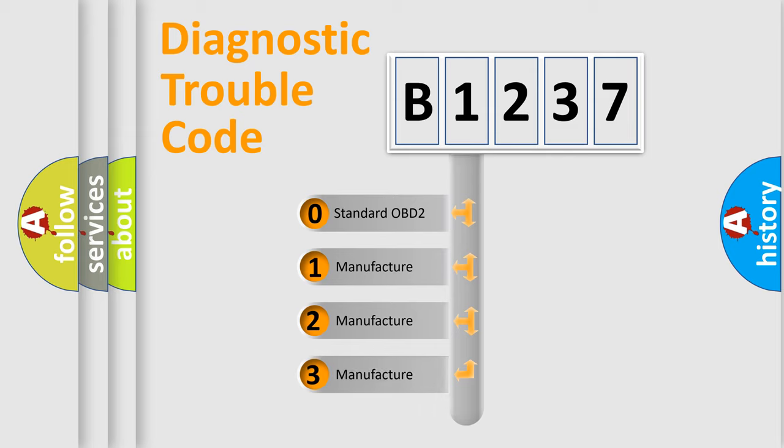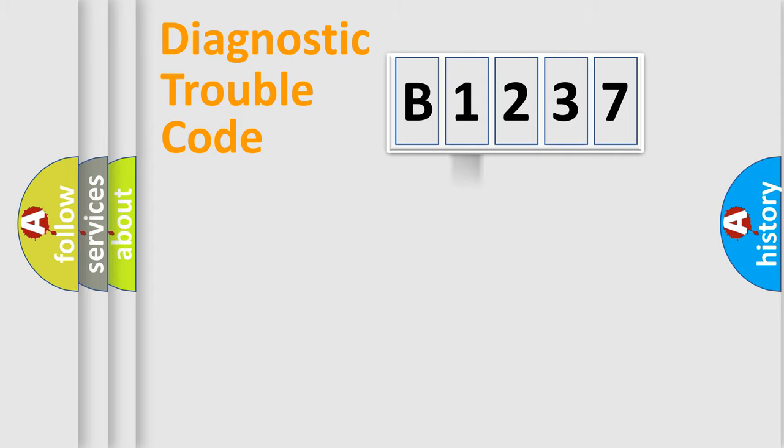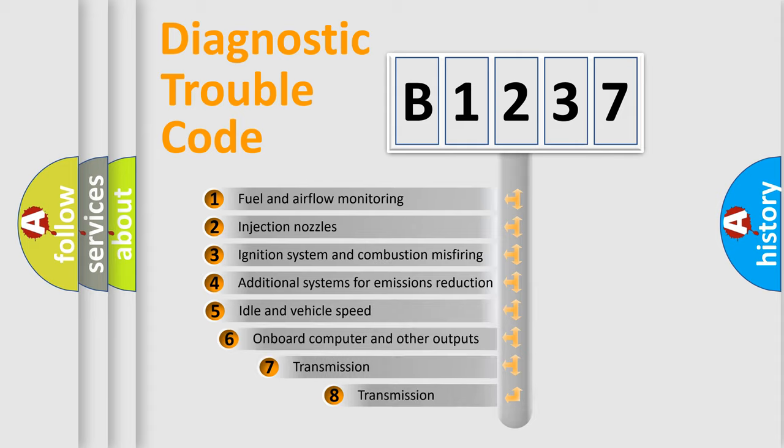If the second character is expressed as zero, it is a standardized error. In the case of numbers 1, 2, 3, it is a more precise expression of the car specific error.